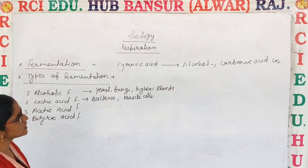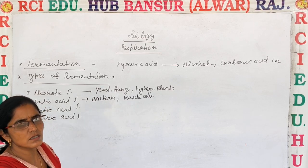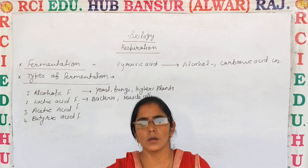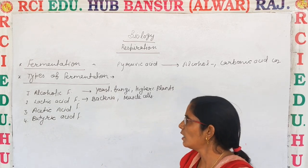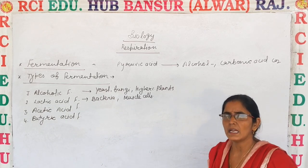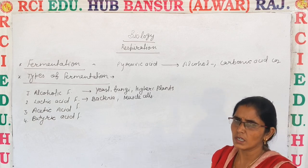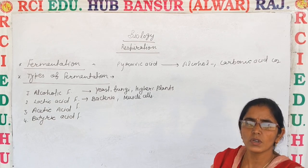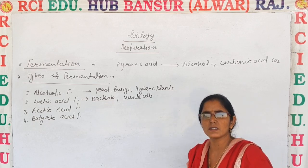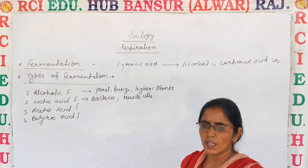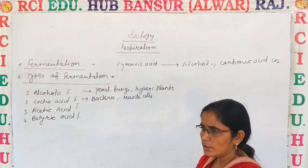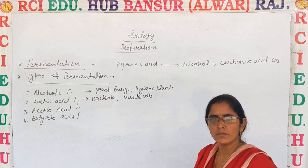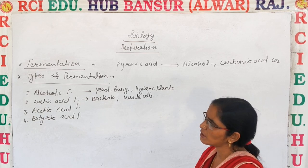Pasteur explained that fermentation occurs in the yeast cell — when the yeast cell breaks down sugar it releases alcohol, which is known as ethanol. But Buchner explained that there is no need for the process to take place only in the yeast cell; fermentation can also be done in non-living cells or in the laboratory.